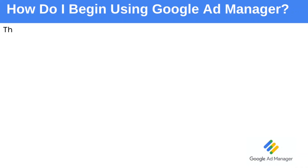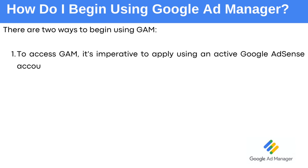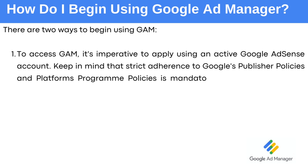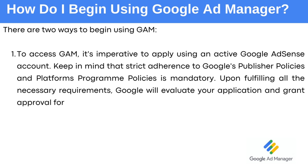How do I begin using Google Ads Manager? There are two ways. First, to access Google Ads Manager, it's imperative to apply using an active Google AdSense account. Keep in mind that strict adherence to Google's publisher policies and the platform's program policies is mandatory. Upon fulfilling all the necessary requirements, Google will evaluate your application and grant approval for the account's activation.